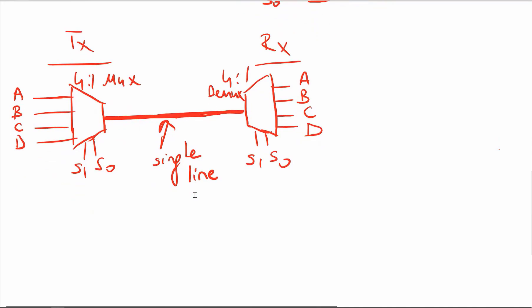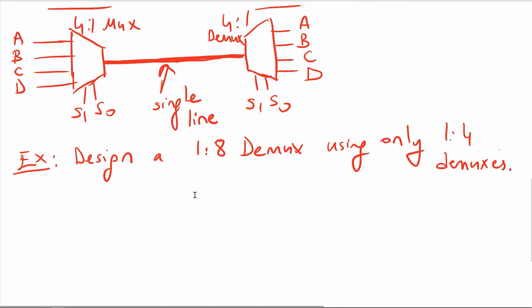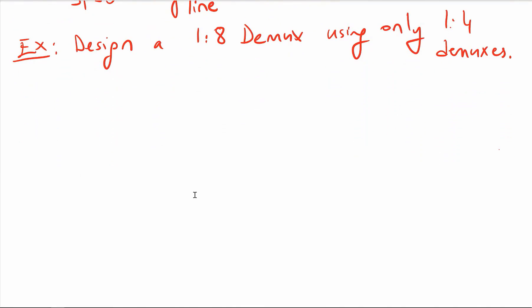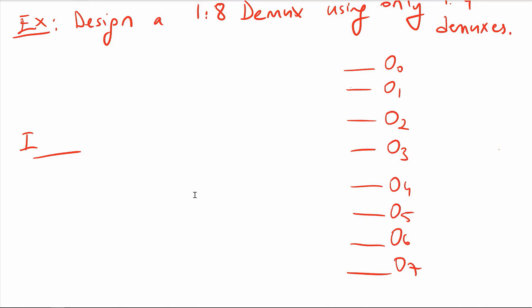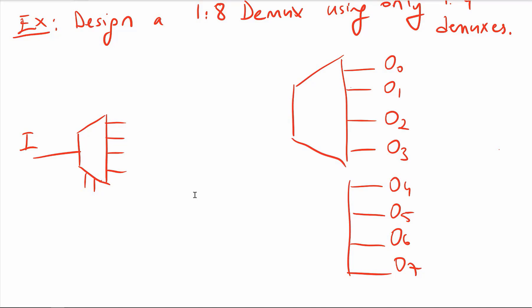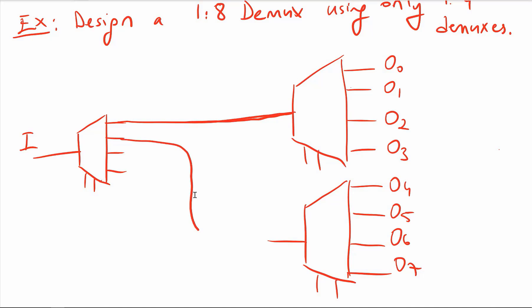Let's do an example: design a 1-to-8 D-mux using only 1-to-4 D-muxes. We have a single input I that needs to go to 8 outputs. For the output stage, I need two 1-to-4 D-muxes. A first-stage 1-to-4 D-mux routes input to either the upper or lower group. With select lines S1 and S0 connected to both output D-muxes, and a new select line S2 controlling the first-stage D-mux, S2 selects between outputs 0-3 or outputs 4-7.